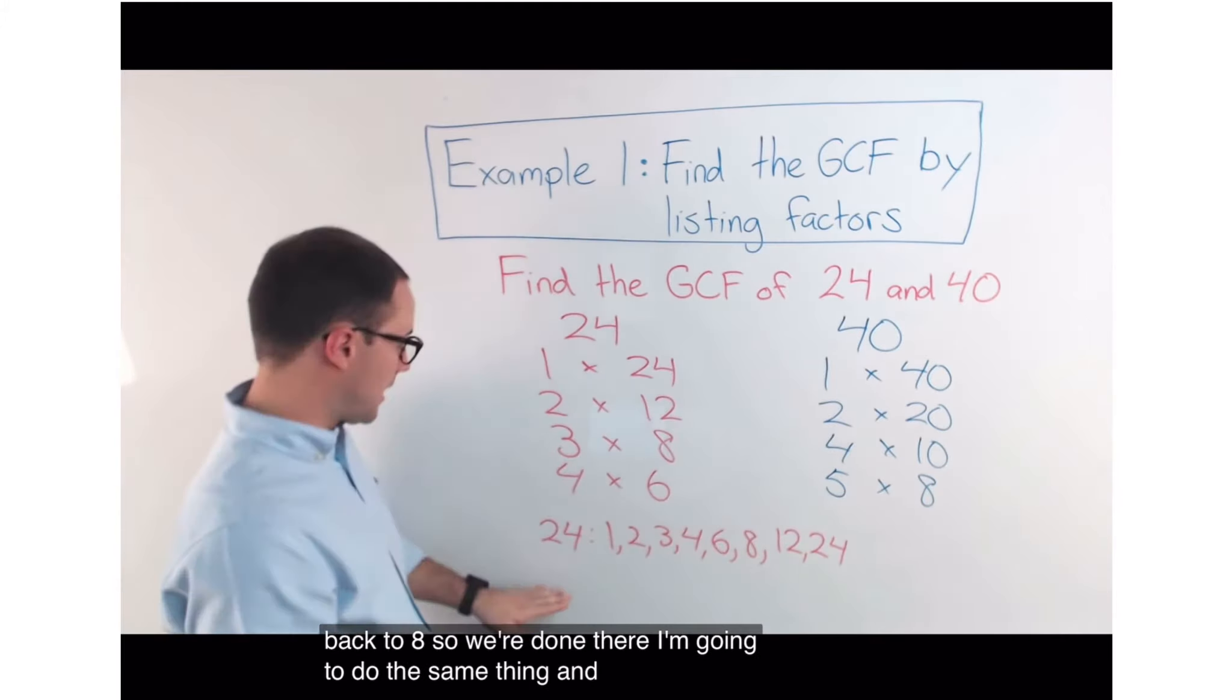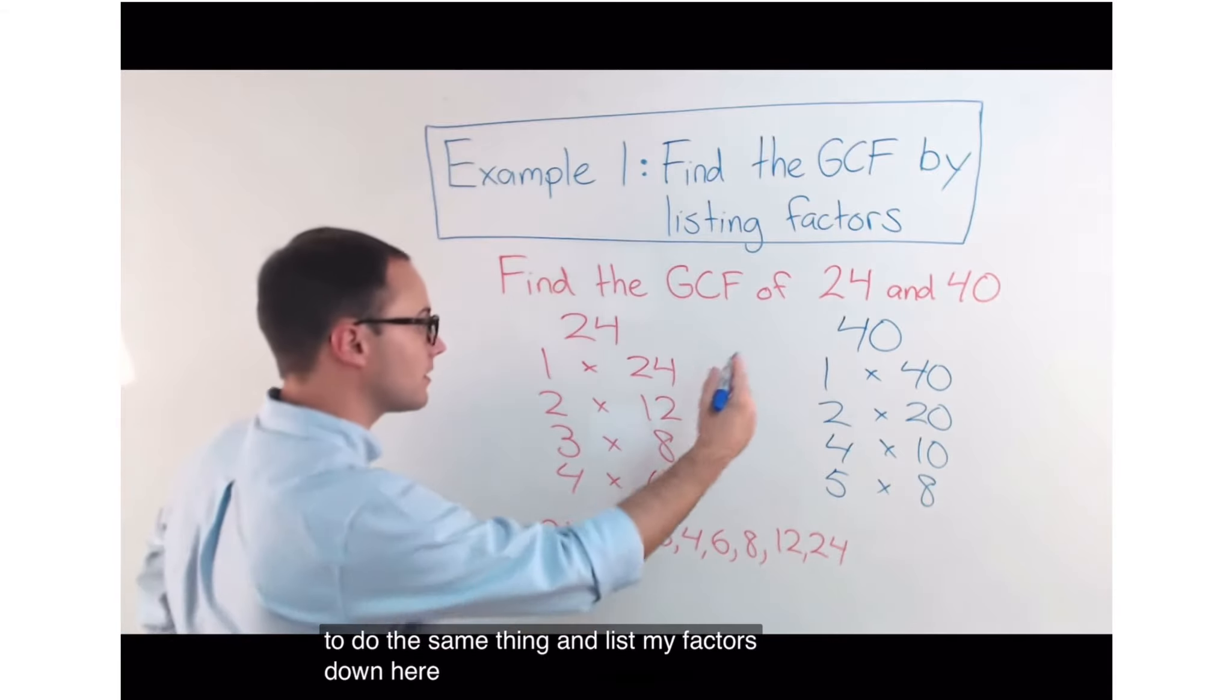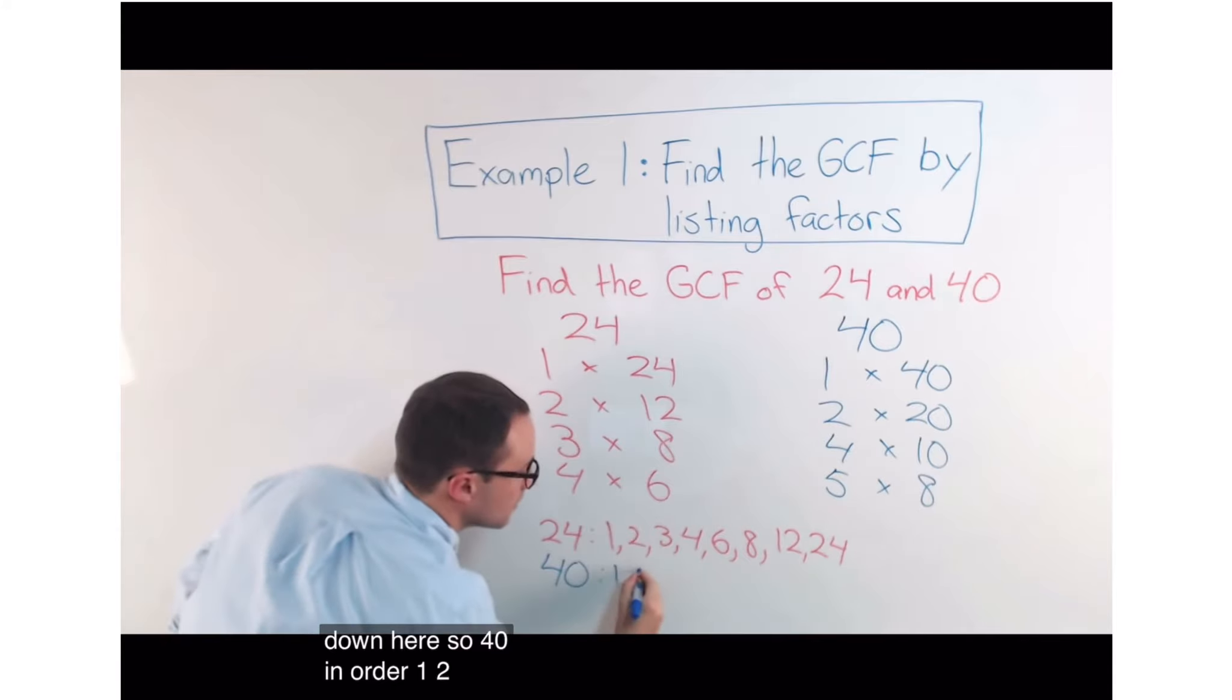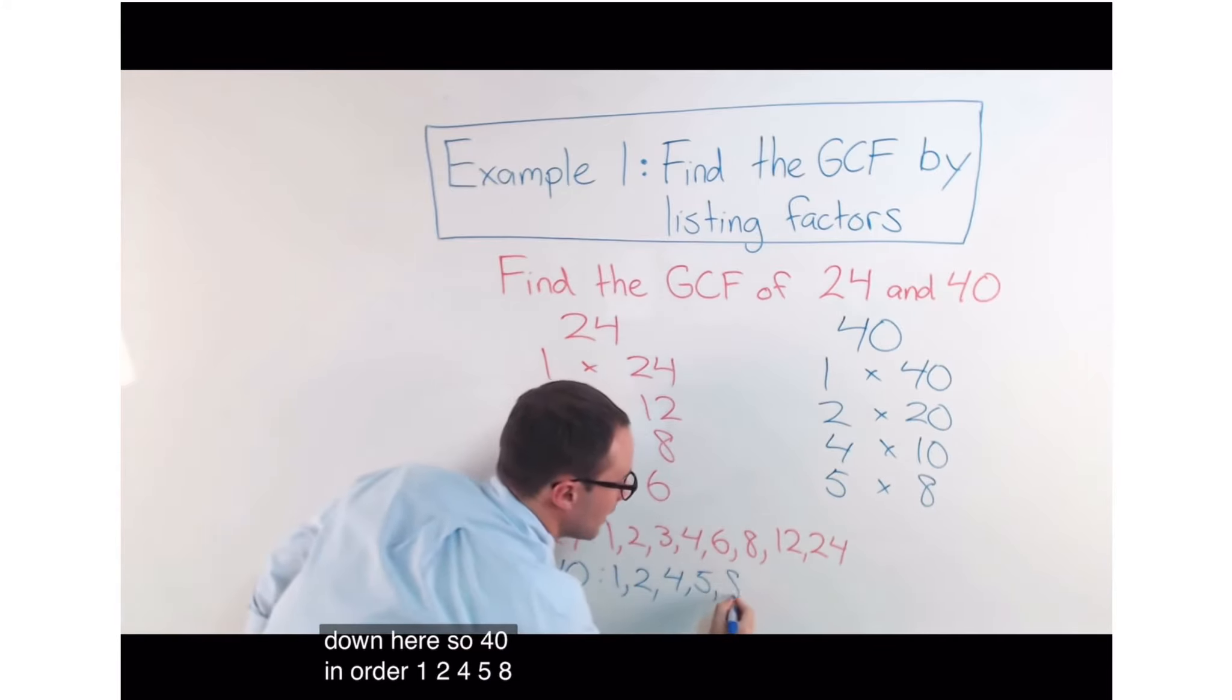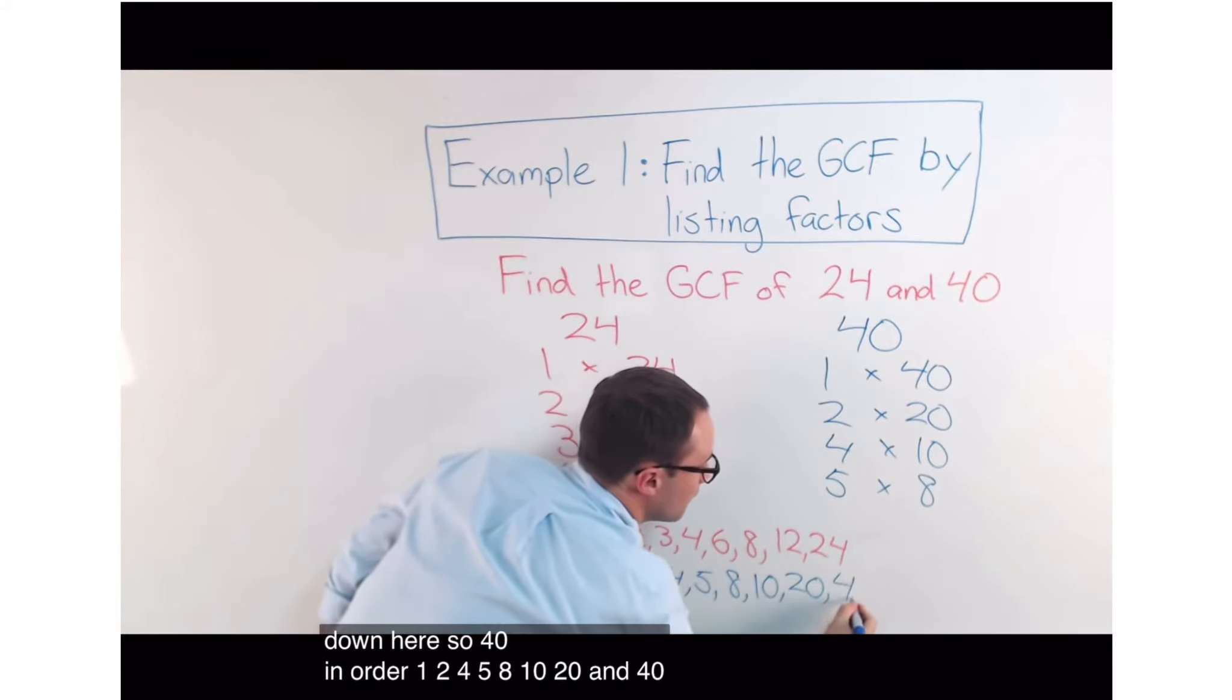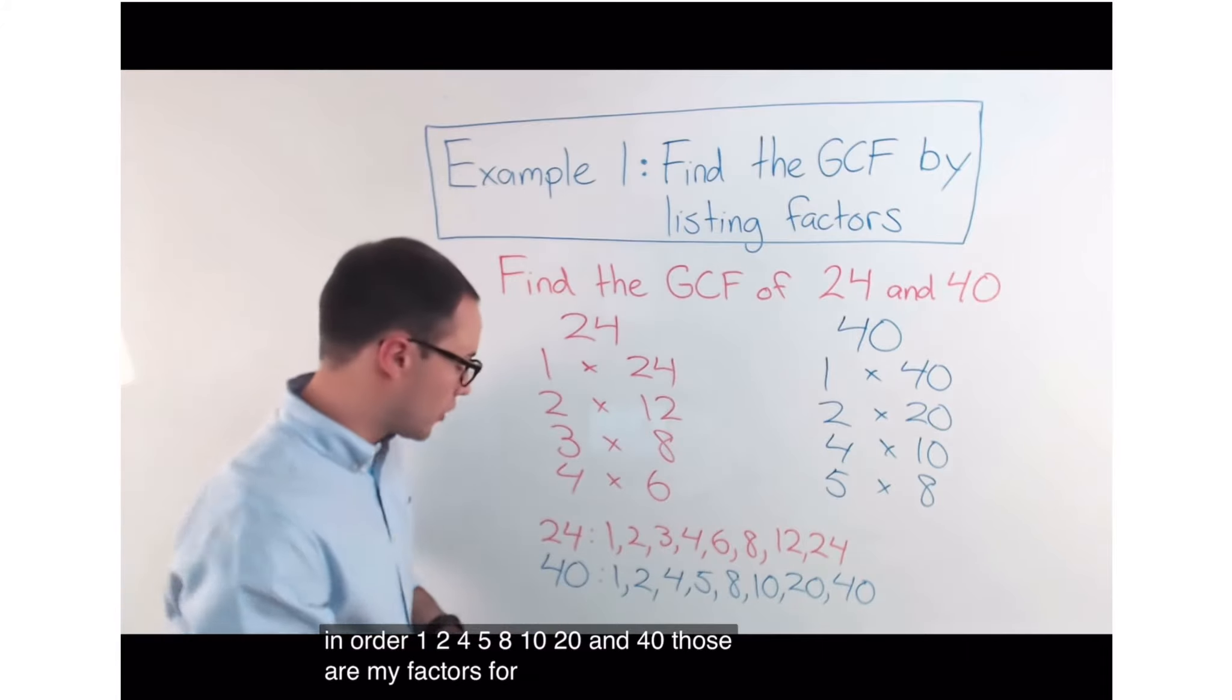I'm going to do the same thing and list my factors down here. So, 40 in order. 1, 2, 4, 5, 8, 10, 20, and 40. Those are my factors for 40.